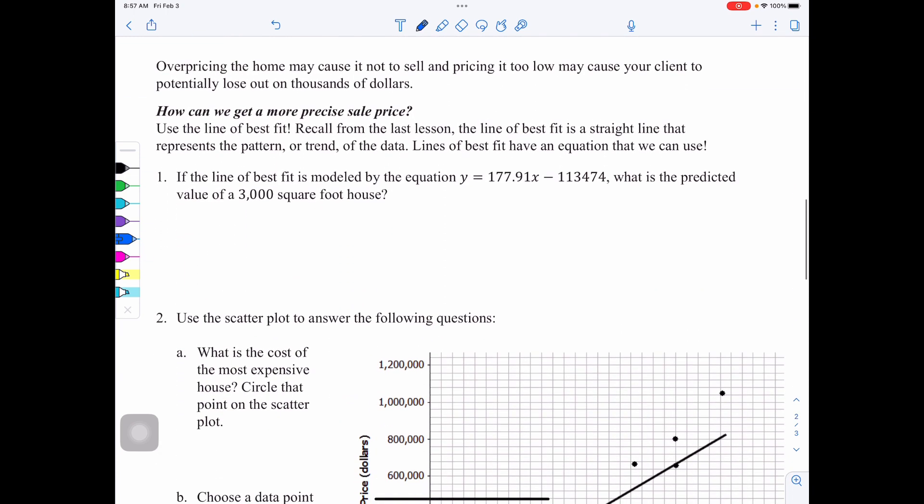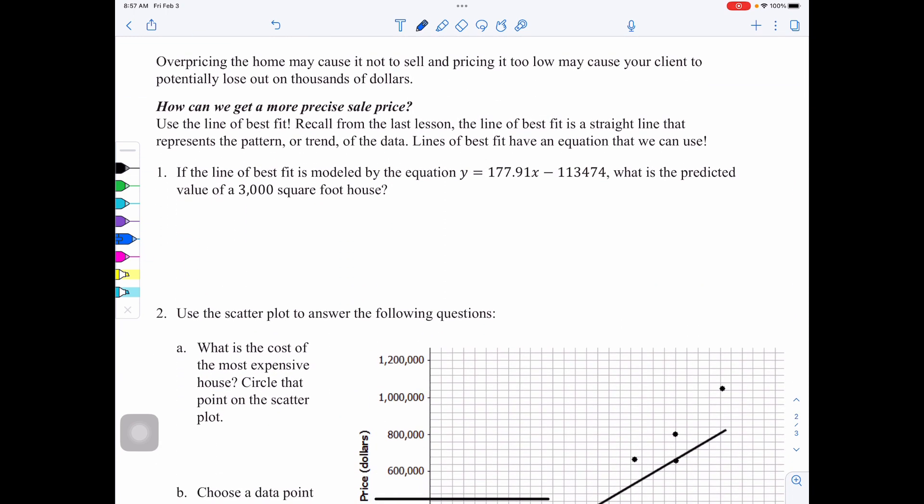Now moving on to the next page, it says overpricing the home may cause it not to sell, and pricing it too low may cause your client to potentially lose out on thousands of dollars. So how can we get a more precise sale price? The answer to that is use the line of best fit.